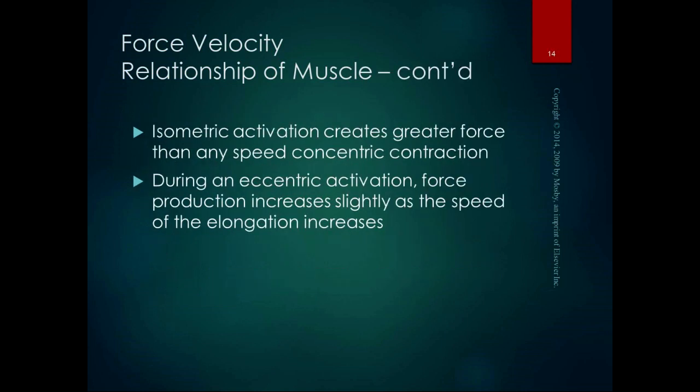Isometric activation creates greater force than any speed of concentric contraction because when it's isometric, those actin-myosin crossbridges can go crazy — they have plenty of time to form those crossbridges. During an eccentric activation, force production increases slightly as the speed of elongation increases, because the actin-myosin are having to react to slow down the pull of the external force.